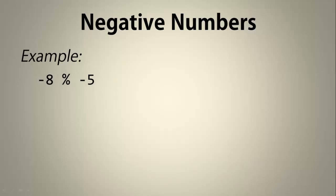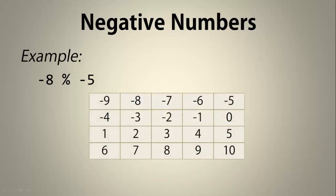Our last example is negative 8 modulo negative 5. We use our same 5 column chart, and we're looking for a number less than or equal to 0 and greater than negative 5. We locate negative 8 and see that our answer is negative 3.